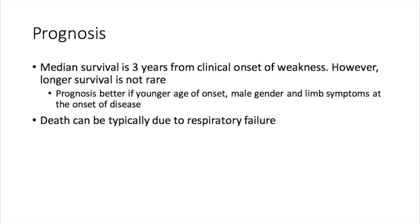The prognosis of motor neuron disease is not great. The median survival is three years from clinical onset of weakness; however, as demonstrated by the case of Stephen Hawking, longer survival can occur. Prognosis is better with younger age of onset, male gender, and limb symptoms at onset of disease. Death typically occurs as a consequence of respiratory failure.